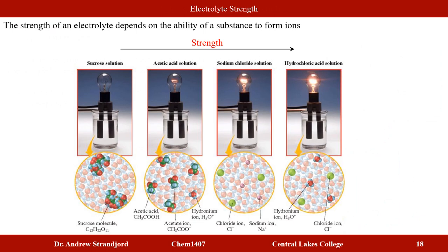Some electrolytes are better at forming a circuit than others. We associate the strength of an electrolyte with its ability to form ionic species. A sucrose solution is a non-electrolyte — it does not conduct electricity. Acetic acid is a weak electrolyte with some ionic character — it conducts a little electricity. Sodium chloride is a better electrolyte with fairly good electrical conduction. A very strong acid like HCl is the best electrolyte, giving good conductivity through both hydronium and chloride ions.